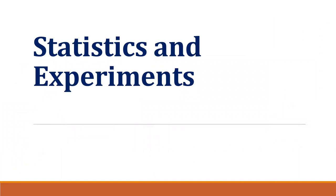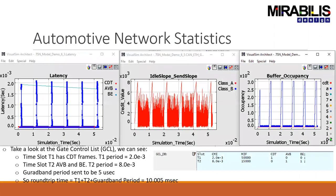Now let's take the statistics and experiments performed in an auto network. The most popular stats are latency, the impact of credit, and buffer occupancy. Buffer occupancy is fairly simple — you have different types of buffers for different data types: CDP, class A, class B, and best-effort. Idle slope and send slope are based on availability; if you look at the previous slide, the idle slope for class A was about 8,000, which is the peak you're seeing.